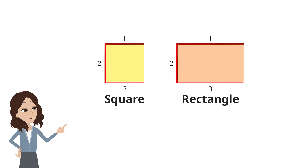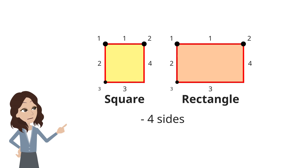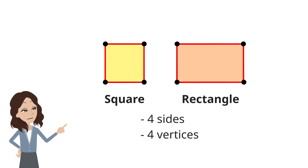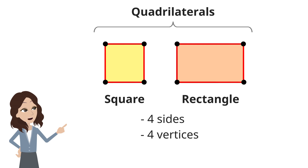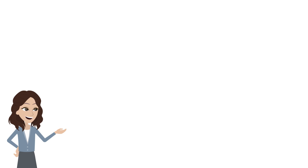Now let's look at a square and a rectangle. They are both made up of four straight line segments, so we say that they have four sides. They also have four points where two line segments meet, so they have four vertices each. So squares and rectangles are quadrilaterals, which have four sides and four vertices.